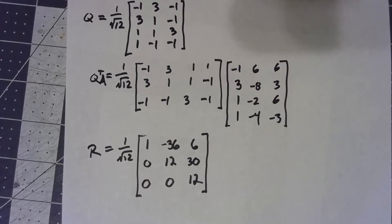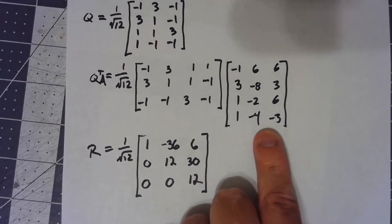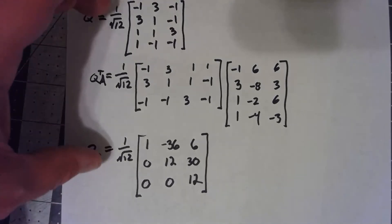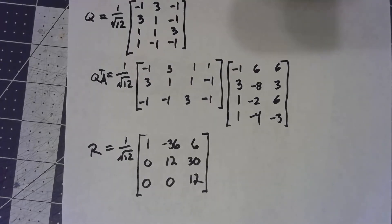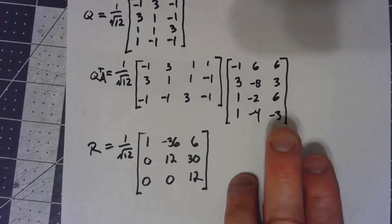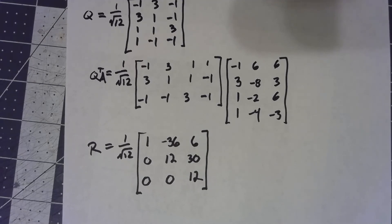I won't check it here, but if we take Q times R we should get A back. Keep in mind we'll end up with 1 over root 12 times another 1 over root 12, giving 1/12 times the middle entries. This is an incredibly important factorization — it allows you to do so much if you go on to study further topics in linear algebra, numerical analysis, and things involving matrices.